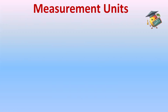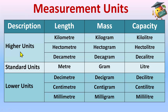We also have other units — the higher units and the lower units. The standard units are meter, gram, and liter. The higher units for length are kilometer, hectometer, decameter, and the lower ones are decimeter, centimeter, and millimeter. For mass: kilogram, hectogram, decagram, gram, decigram, centigram, and milligram. For capacity: kiloliter, hectoliter, decaliter, liter, deciliter, centiliter, and milliliter.